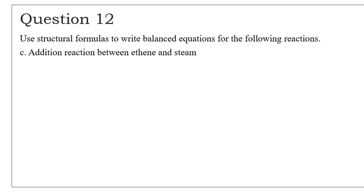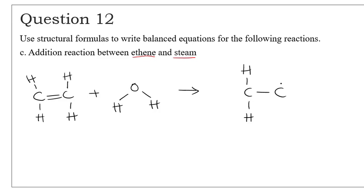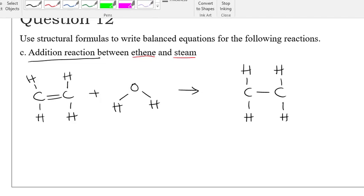We have another addition reaction, this time between ethene and steam. Steam is just a fancy name for water. People tend to forget to write the structural formula, so if you just write H2O that's not what the question is asking for. You have to be careful with things like that. The double bond once again will be broken. The question actually tells you that it is an addition reaction, which means you need to break the double bond.